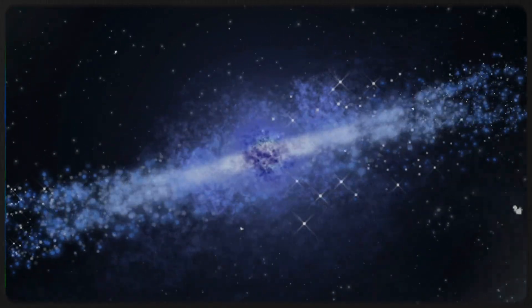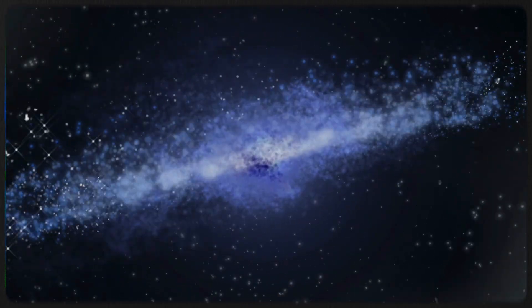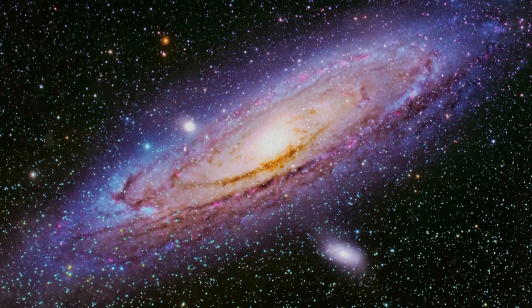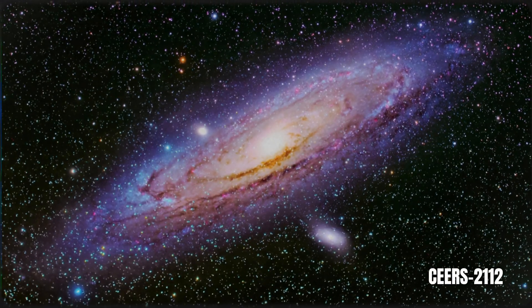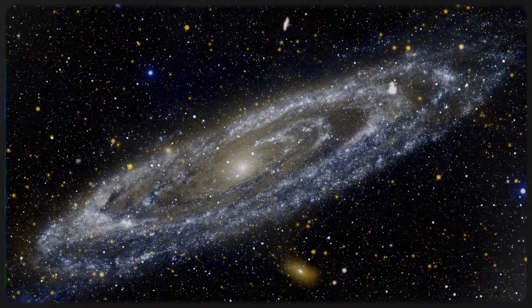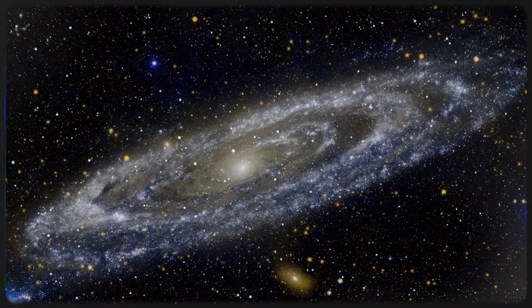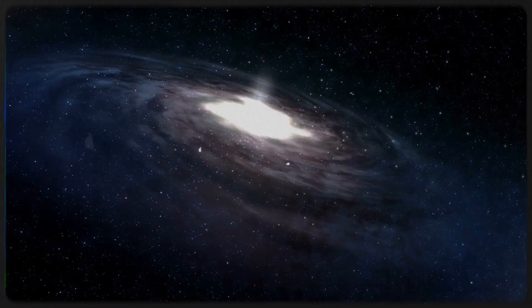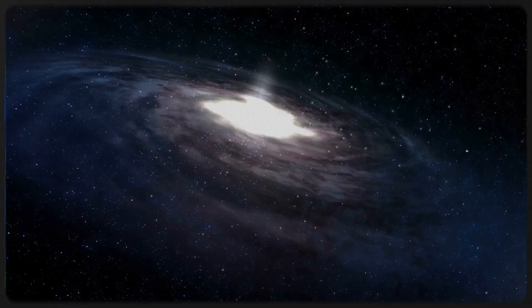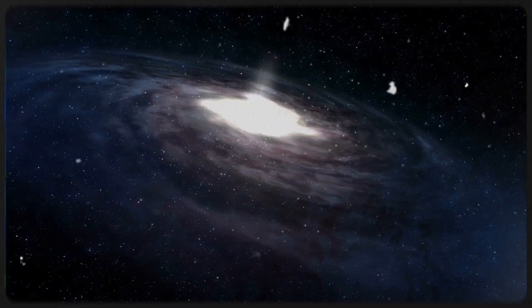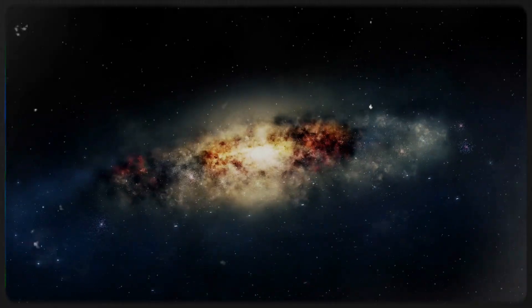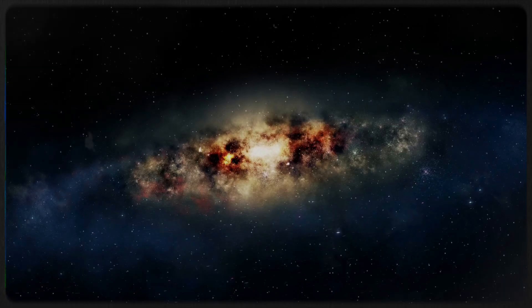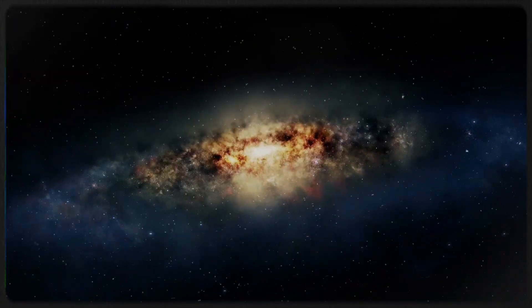If our current theories were correct, galaxies in the early universe should be much smaller and less developed. Yet, one of Webb's most astonishing discoveries challenges this assumption, a galaxy called CEERS 2112. This remarkable galaxy formed just a few hundred million years after the Big Bang, yet it already rivals the Milky Way in size. Its existence suggests that galaxies may have evolved far more rapidly than previously thought, possibly within a fraction of the time scientists had estimated. The discovery of such a massive and mature-looking galaxy so early in cosmic history raises new questions about the timeline of galaxy formation and whether our models need to be drastically revised.